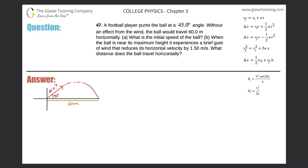Number 47: a football player punts the ball at a 45-degree angle. Without an effect from the wind, the ball would travel 60 meters horizontally. What is the initial speed of the ball? So we have a ball being punted at an angle of 45 degrees relative to the horizontal, traveling a range of 60 meters, and we are tasked to find the initial velocity. We can use this formula on the right-hand side that I just boxed.